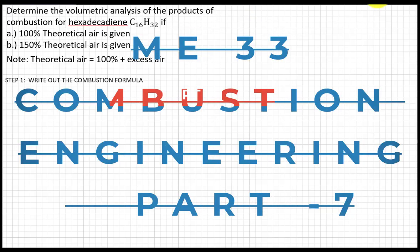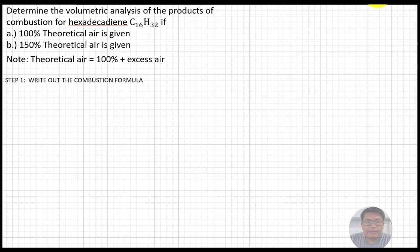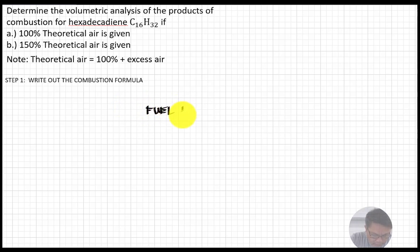We have a problem: determine the volumetric analysis of products of combustion for hexadecadiene C16H32. Part A is if 100% theoretical air is given, and Part B if 150% theoretical air is given. Note that 150% theoretical air means 100% theoretical air plus 50% excess air. We go back to step one and write out our combustion formula — fuel plus air gives the product of combustion.